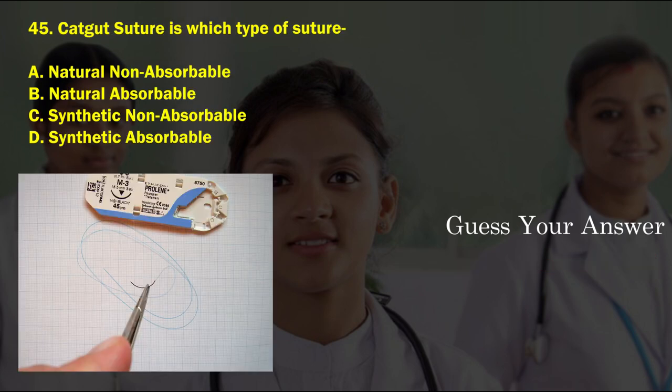Catgut suture is which type of suture? Option A: natural non-absorbable, option B: natural absorbable, option C: synthetic non-absorbable, option D: synthetic absorbable.